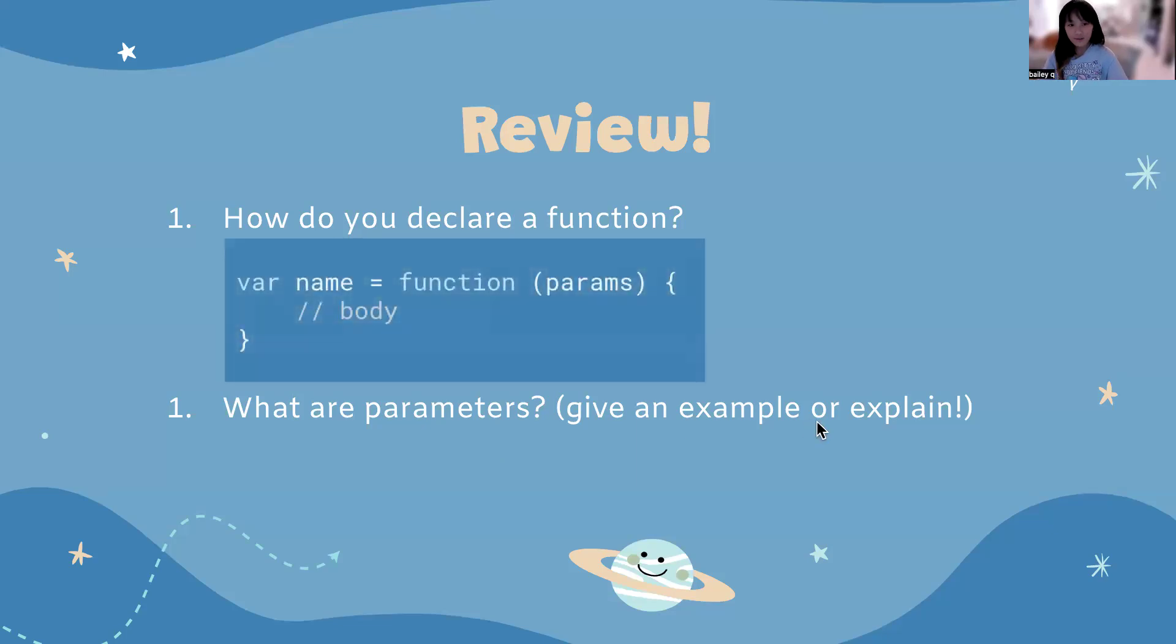For the first one, we can declare a function using this command: var name of function equals function, then we have our parameters inside of the parentheses, curly brackets, and then inside the curly brackets, we actually defined what happens and executes inside of the function.